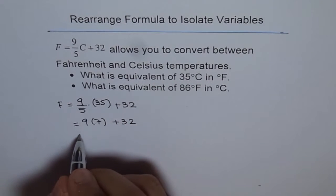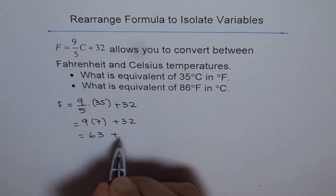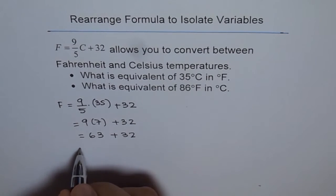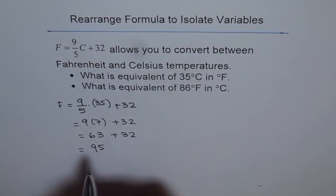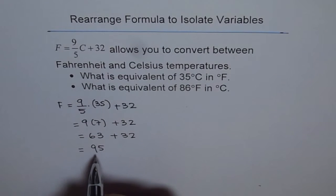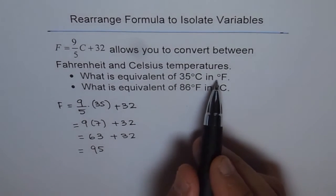and 9 times 7 is 63. So we get 63 plus 32, and that is 95. So we get F equals to 95, and temperature unit is degree Fahrenheit.